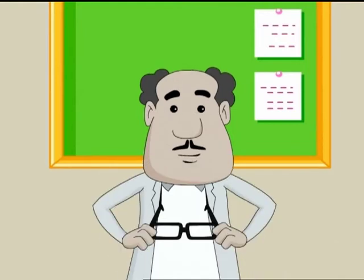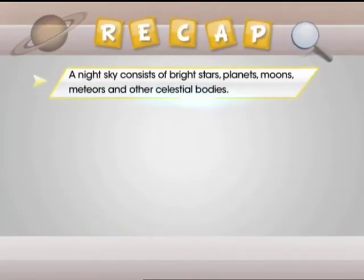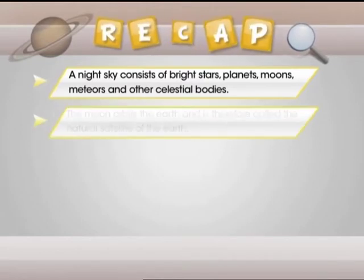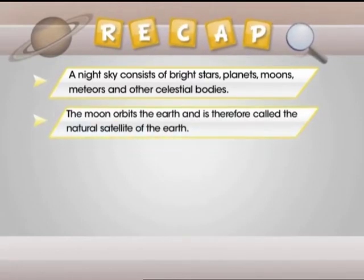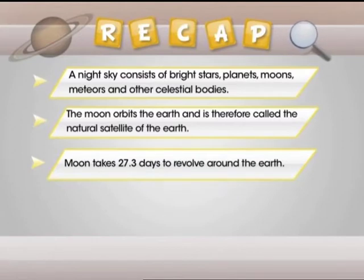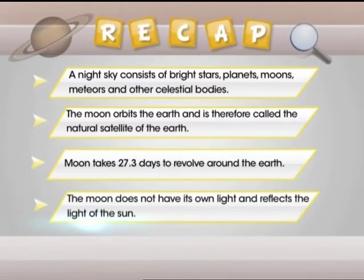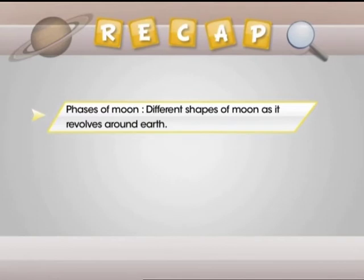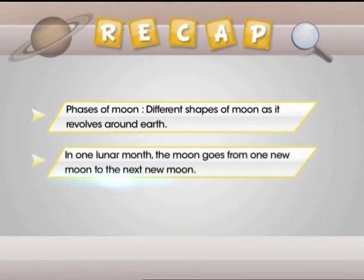And now let's orbit back to where we started for a quick recap. A night sky consists of bright stars, planets, moons, meteors, and other celestial bodies. The moon orbits the earth and is therefore called the natural satellite of the earth. Moon takes 27.3 days to revolve around the earth. The moon does not have its own light and reflects the light of the sun. As the moon circles the earth, it seems to appear in different shapes in the sky. These shapes are called phases of the moon. In one lunar month, the moon goes from one new moon to the next new moon.